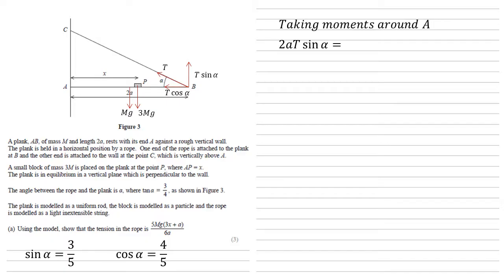Clockwise, we've got the force of gravity acting on P, which is 3Mg, and that's a distance of x from A. And we've got the mass of the plank itself, which is mg, and as that's halfway along, that is a distance of A from A. So we've got our equation of 2A T sine alpha equals 3XMg plus AMg.